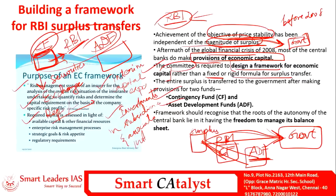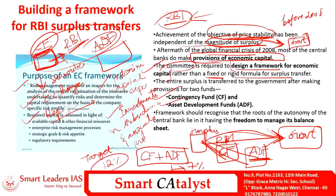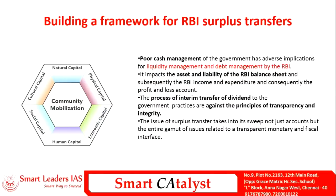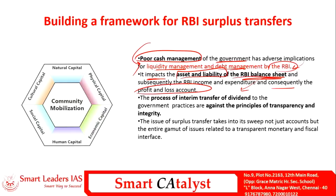As of now, the contingency fund and asset development fund are at 7 percent but the RBI's actual target is 12 percent. The central bank wants to achieve 12 percent from the current 7 percent. The major concern is that poor cash management by the government should not affect the liquidity or debt management of RBI — it is a cyclical effect that impacts the assets and liabilities of RBI's balance sheet, consequently affecting the profit and loss account and surplus of the RBI.